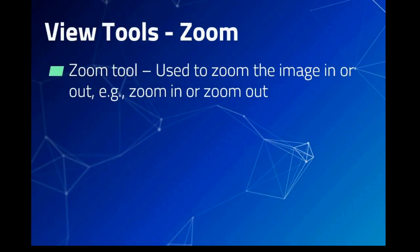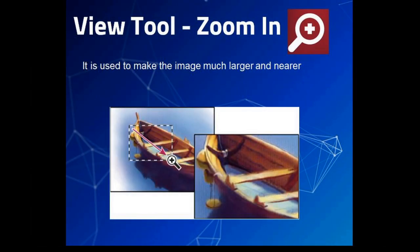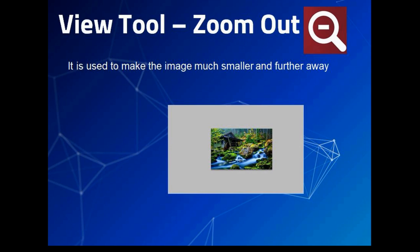Zoom is one of the View tools. It is used to zoom the image in or out. The Zoom In tool is used to make the image much larger and nearer — we can see a portion of the image much closer. The Zoom Out tool is used to make the image much smaller and further away, reducing the size of the image.